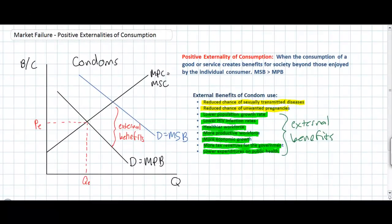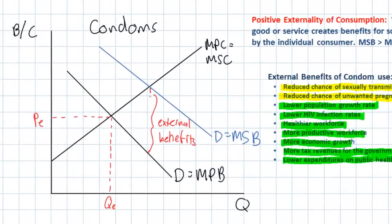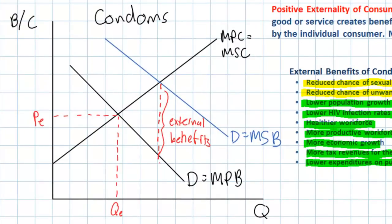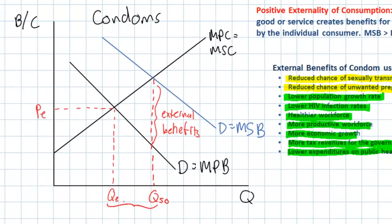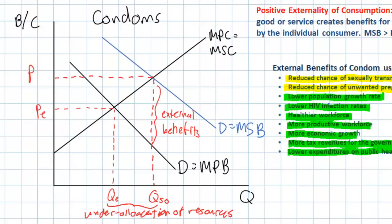Since private individuals will base their decision whether or not to use a condom on only their private benefits, the equilibrium level of condom usage will be only QE. However, once we take into account all of these external benefits, we should realize that society's demand for condoms exceeds the demand from private condom users. Therefore, there is a socially optimal quantity of condom use, QSO, which exceeds the private free market quantity QE. The distance between QE and QSO represents the under-allocation of resources towards condoms. The price at the intersection of MSB and MSC represents the socially optimal price because it corresponds with the social benefits of condom use.